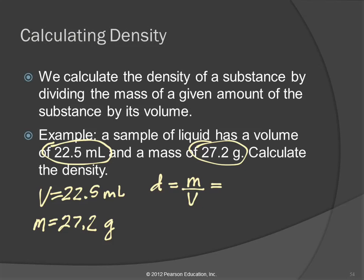We're going to plug the numbers into the equation — put the mass where the M is, write the unit, and put the volume down where the V is, write the unit. Then we get out our calculator. I wrote the same number on the top and the bottom — easy mistake, copying numbers down wrong. The volume is supposed to be 22.5. So 27.2 divided by 22.5. My calculator is giving me a lot of numbers, so I'm going to ask myself: how many significant figures should my answer have? It should have three.